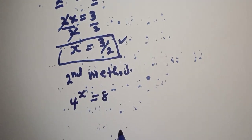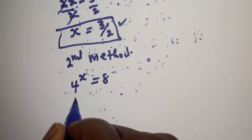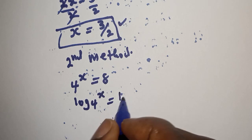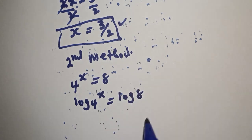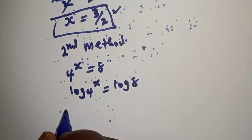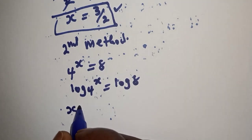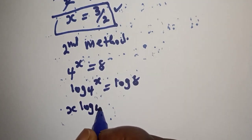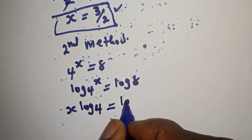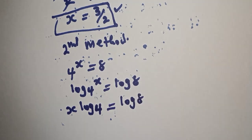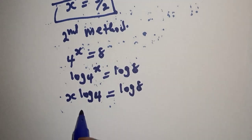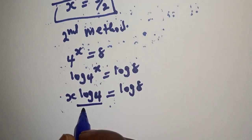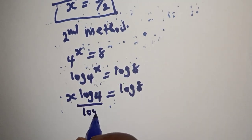Now let's consider the second method. We have 4 raised to power s is equal to 8. Let's take the log of both sides: log 4 raised to power s is equal to log 8. Then s times log 4 is equal to log 8. Dividing both sides by log 4.